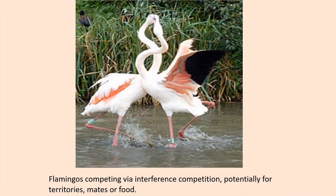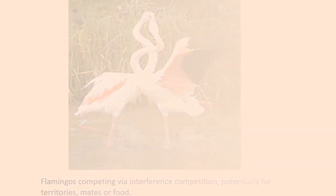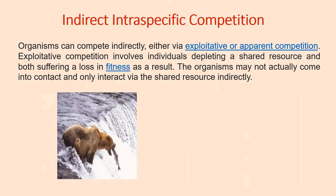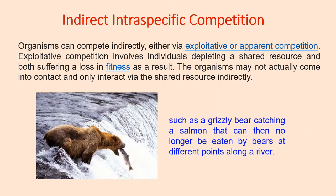Here you can see direct competition between male deer locking horns and fiercely defending their territories — an example of direct competition. In another picture, flamingos compete via interference competition, potentially for territories, mates, or food. In indirect intraspecific competition, organisms can compete indirectly via exploitative or apparent competition. Exploitative competition involves individuals depleting a shared resource, such as a grizzly bear catching a salmon that can then no longer be eaten by bears at different points along the river.